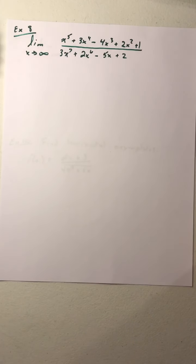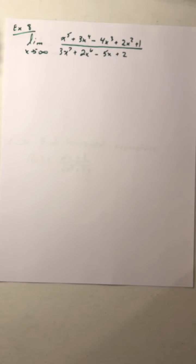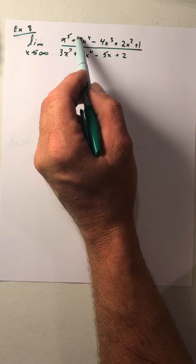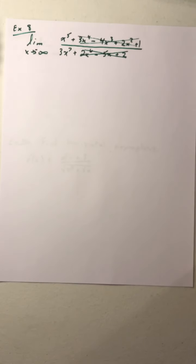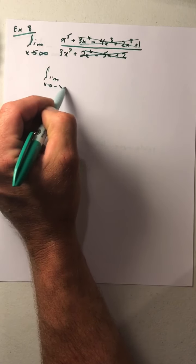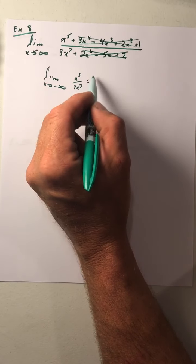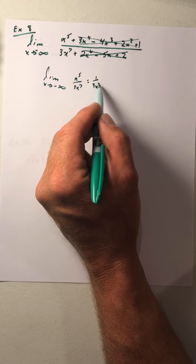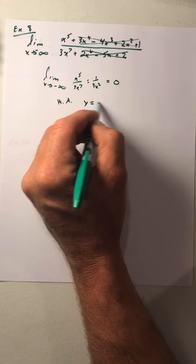We have a few more examples. Example 8 looks complex — let's change this to negative infinity. As x gets smaller and smaller, the extra terms have little bearing. We focus on the highest-degree numerator and denominator terms. This becomes the limit as x goes to negative infinity of x to the 5th over 3x to the 7th, which simplifies to 1 over 3x squared. As x gets larger, 1 divided by 3x squared goes to 0, so we have a horizontal asymptote of y equals 0.